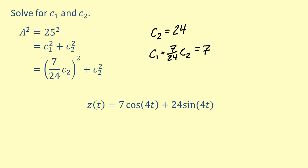Finally, z of t equals 7 cosine 4t plus 24 sine 4t.